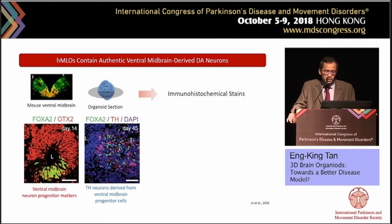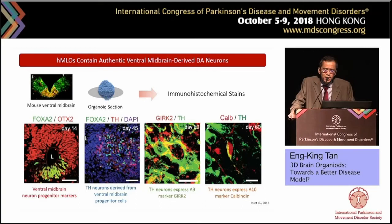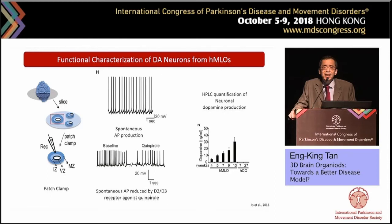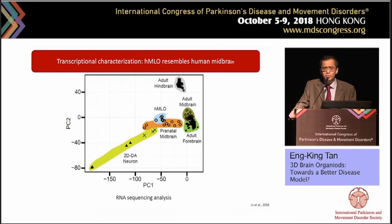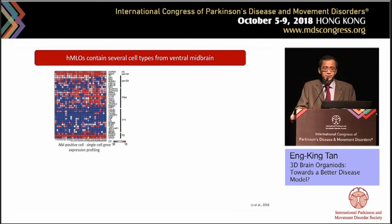At day 45, we see TH-positive neurons derived from the ventral mid-brain. The numbers increase, and at day 60 these TH neurons express the A9 marker GIRK2, and some express Calbindin, which is expressed by A10 dopamine neurons. These neurons show characteristics of functional activity — particularly in generation of action potentials — and are modulated by the dopamine receptor agonist. We quantified dopamine levels in tandem with the growth of the organoids. Transcription analysis comparing different adult mid-brain regions with 2D, 3D, and human prenatal mid-brain showed a significant overlap of our mid-brain organoids with the prenatal mid-brain, but not with other regions.